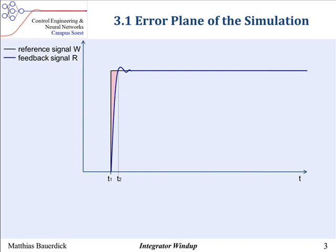That means, the integration of the control error during the rise time multiplied with the controller parameter KI, which is the integration constant, is approximately the integrator output in steady state.